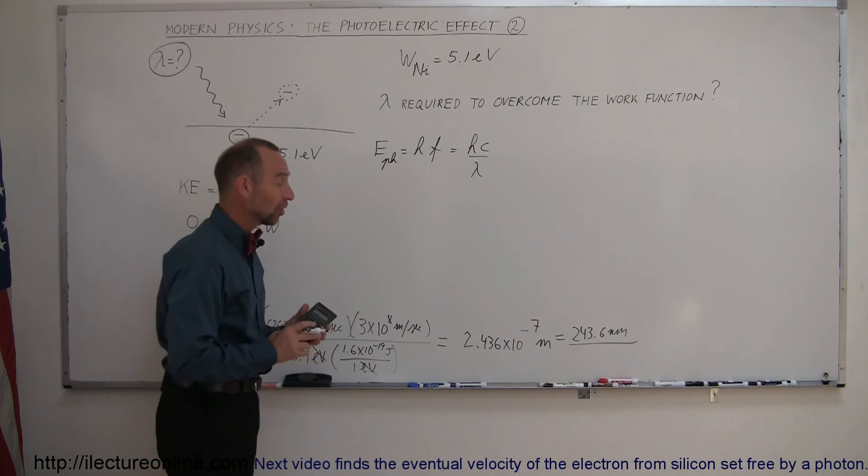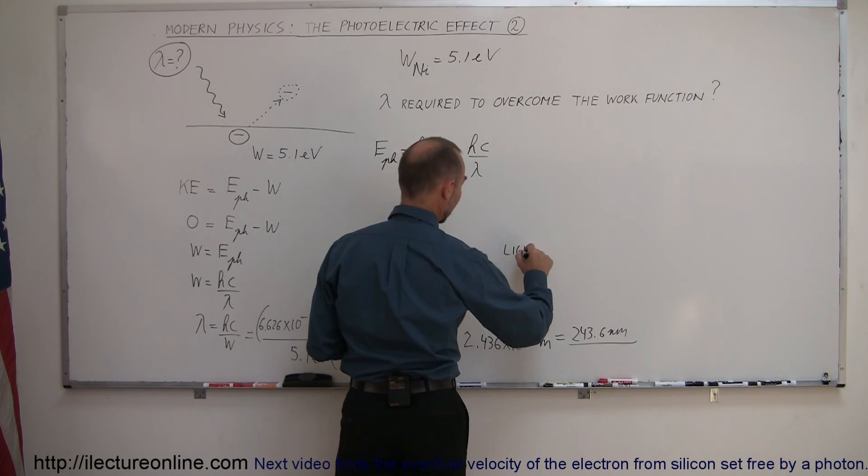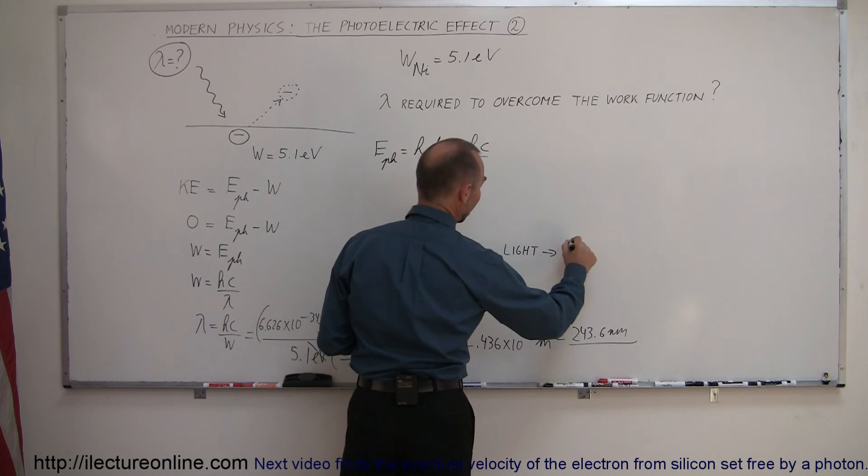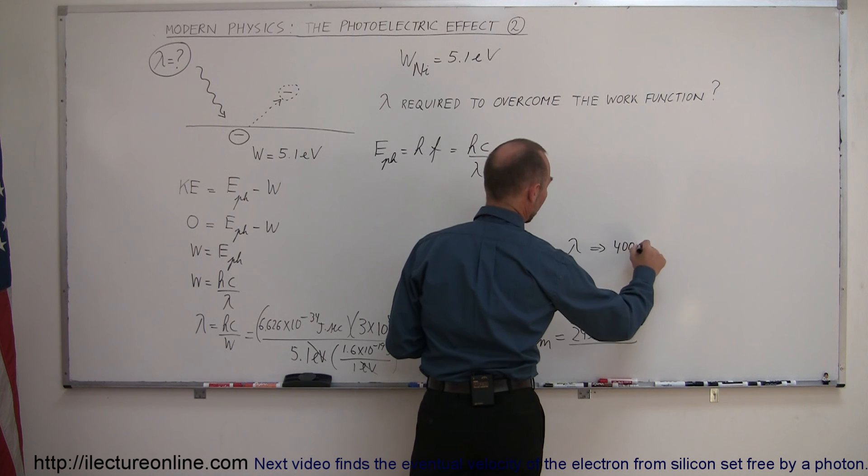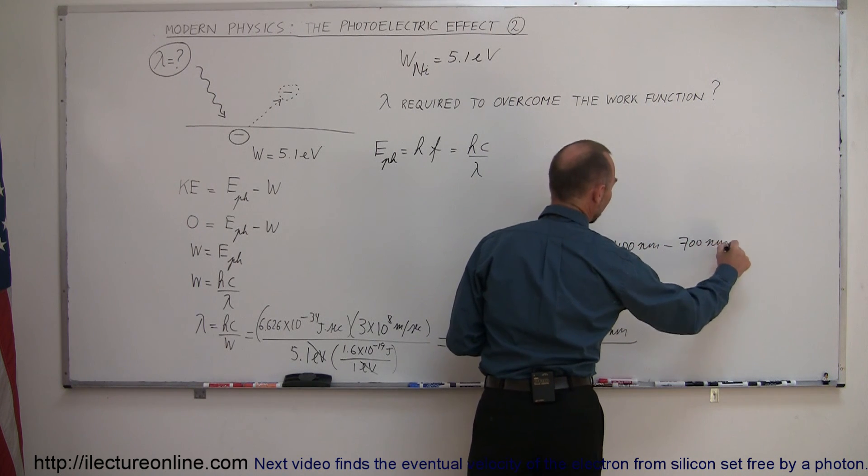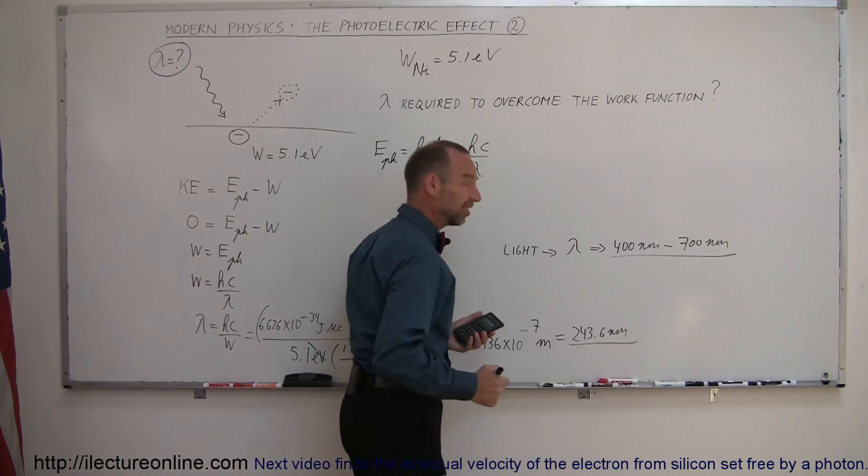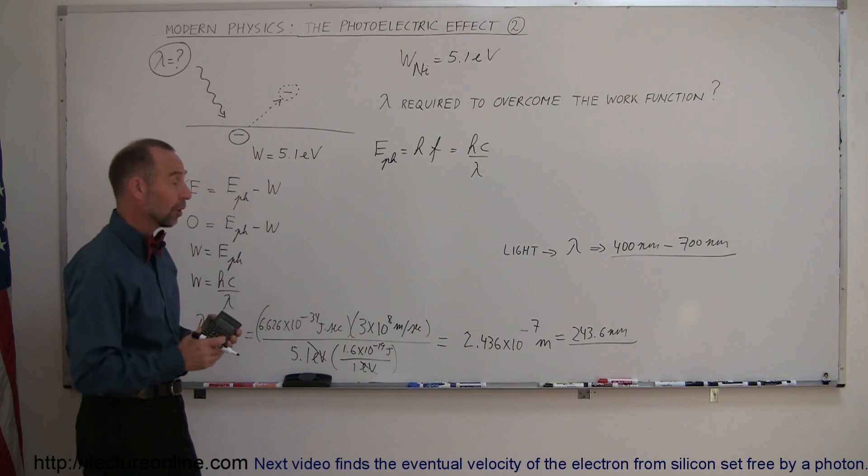All right, and just to give that a little bit more understanding, realizing that for visible light, the wavelength varies anywhere from 400 nanometers for purple light to 700 nanometers for red light, you can see that this does not fall within the range of visible light. Actually, this falls within the range of ultraviolet light,